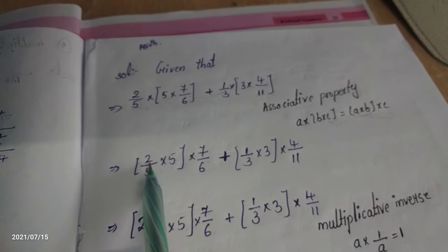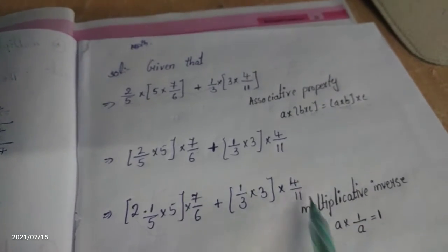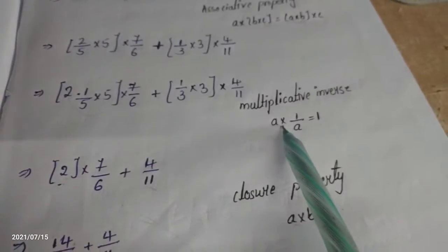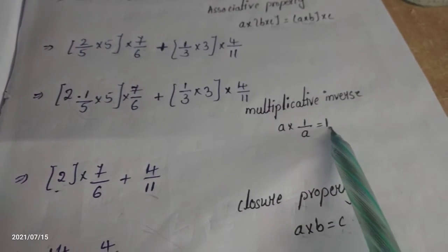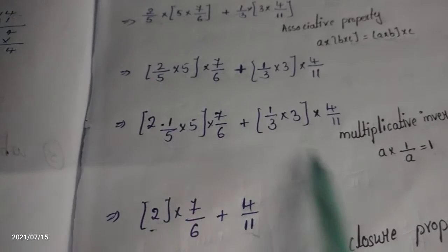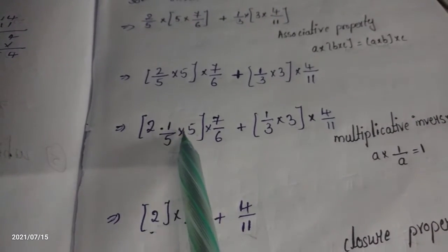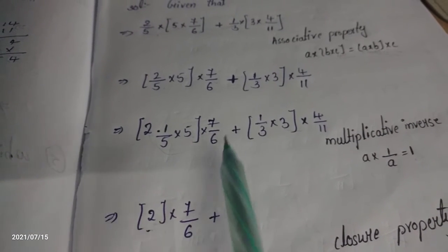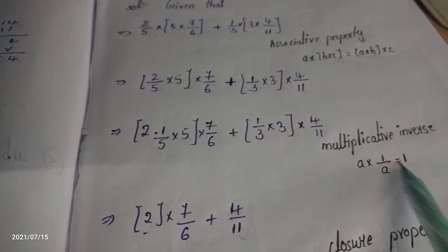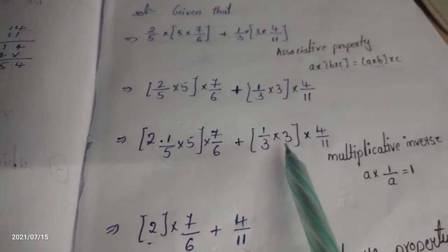In the next step, I am taking the first two numbers as common. What is left? 1 by 5 into 5 is in the form of A into 1 by A. The whole value is one. A into 1 by A equals one — that is the multiplicative inverse. Here 2 into 1 by 5 into 5: one by five times five equals one, so the value is one. Two ones are two, so I write 2, plus 7 by 6 as it is. Similarly, 1 by 3 into 3 equals one — it is in the form A into 1 by A.